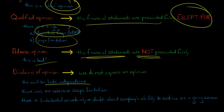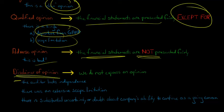One is if the auditor lacks independence. You might be thinking, why would the company hire the external auditor to begin with if they knew that they lacked independence? Well, they might have had independence at the beginning of the audit when they were hired, but then something happened that changed that. For example, the CEO of the audit firm ended up marrying the CEO of the company being audited during the audit process. Then the auditor would have to say, hey, we lack independence now — we're no longer independent. So they'd issue a disclaimer of opinion, and the company would go and hire a different auditor.